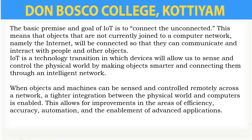The embedded technology in the objects helps them to interact with internal states and external environments, which in turn helps in the decision-making process. IoT is a concept that connects all the devices to the internet and lets them communicate with each other. So IoT is a giant network of connected devices, all of which gather and share data. We can say IoT is a technology transition in which devices allow us to sense and control the physical world by making objects smarter and connecting them to an intelligent network.